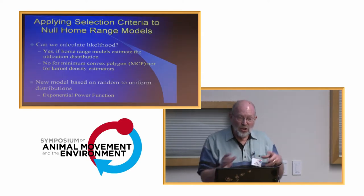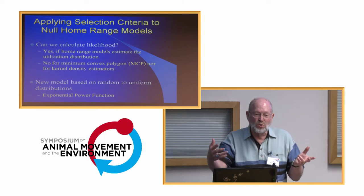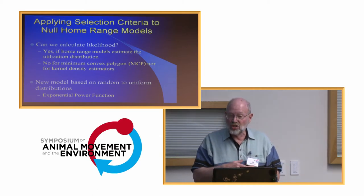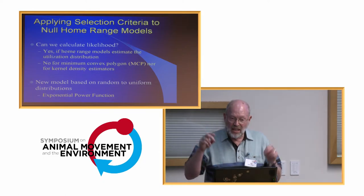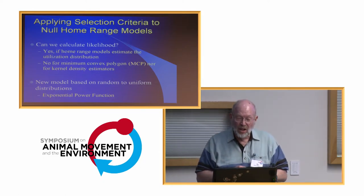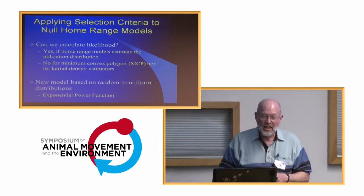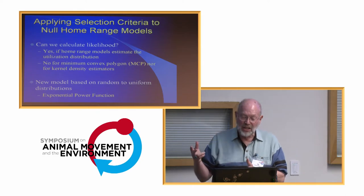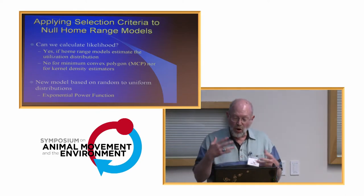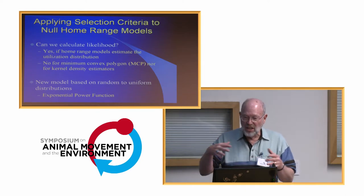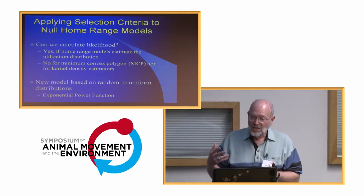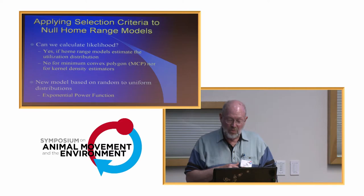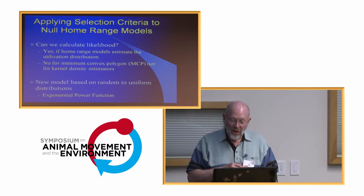If we're going to use these null models, how do we choose which one? We can actually apply selection criteria based on information theory methods — we can do that if we can calculate the likelihood of a model. If we have home range models based on utilization distribution like a normal, we can do that. But for a minimum convex polygon or a kernel density estimate, we can't. So we have to use models based on some kind of parametric distribution.